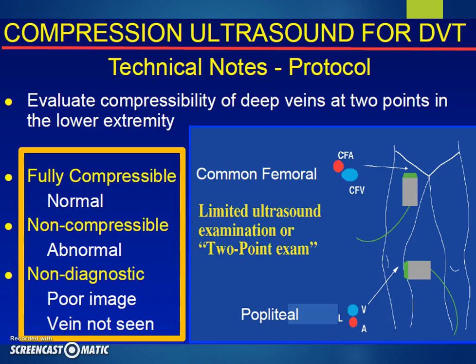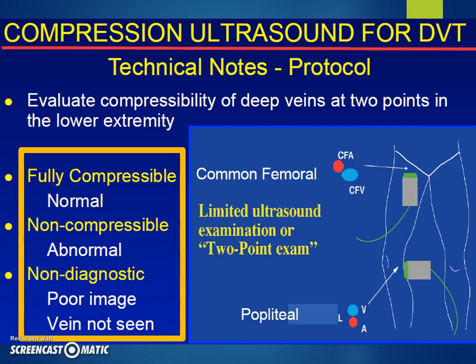Let's talk about the technique. We're going to focus on a two-zone technique — the region behind the knee distally and the inguinal space proximally. There are three result categories: fully compressible (negative), non-compressible (positive, suggestive of DVT), and non-diagnostic — where you have poor image quality or are uncertain. Have the courage to call a non-diagnostic scan non-diagnostic, and don't just say it was probably normal.